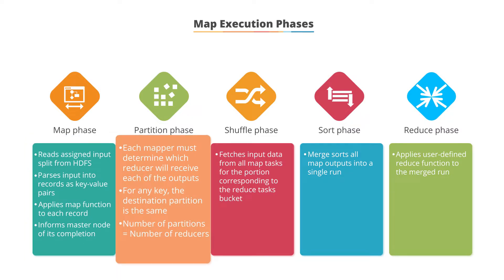In the partition phase, each mapper must determine which reducer will receive each output. For any key, regardless of which mapper instance generated it, the destination partition is the same. So for a single word, that word would always go to the same destination partition.